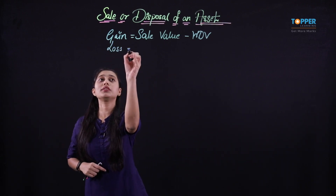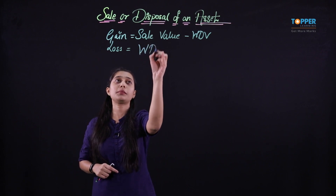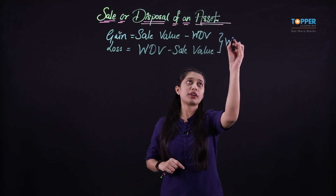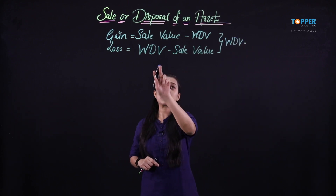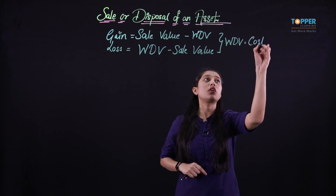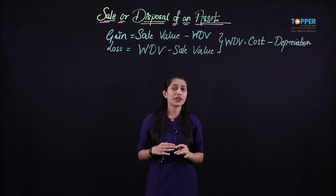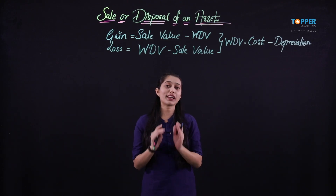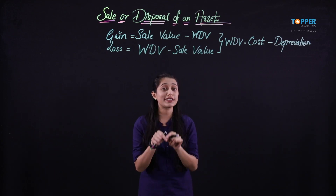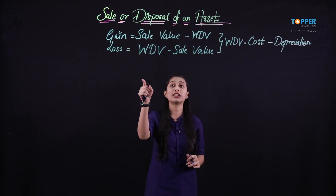While calculating the gain, we will have: gain = sale value less the WDV, that is the written down value on the date of sale. Similarly, when we talk about the loss, the sale value is going to be less than the WDV. So the loss will be nothing but WDV less the sale value. In both cases, firstly we will have to identify the WDV on the date of sale and then compare it with the sale value. WDV is nothing but the cost less the depreciation — you can also say book value less the depreciation accumulated to that point.